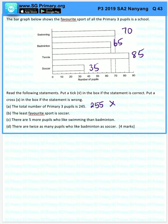B, the least favorite sport is soccer. This is correct, soccer has the least number of pupils. There are 5 more pupils who like swimming than badminton. Swimming is 70, badminton is 65. It's true, there are 5 more.